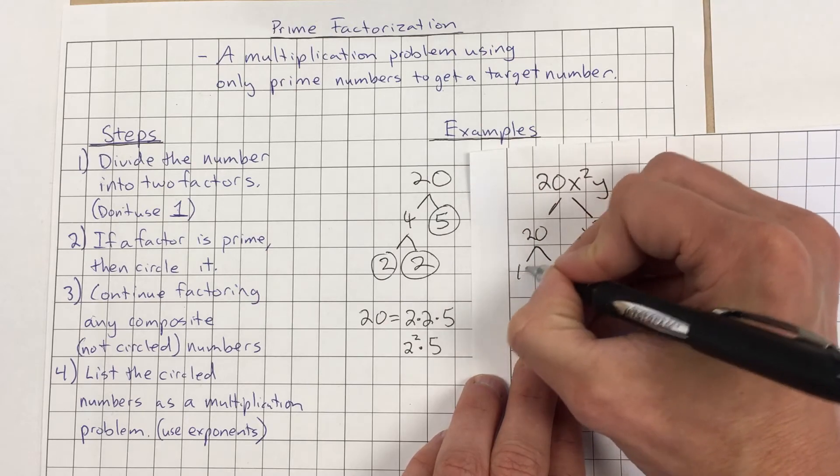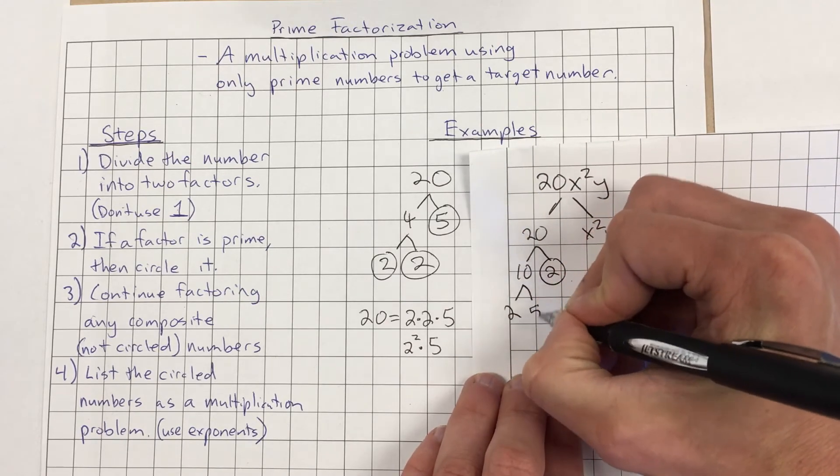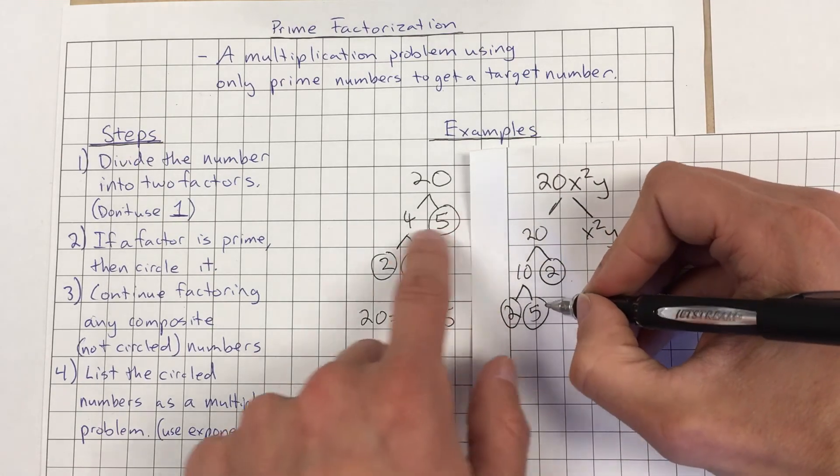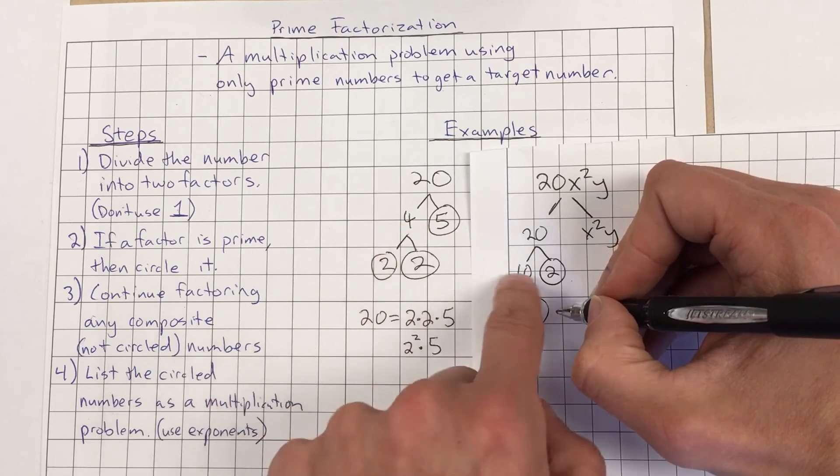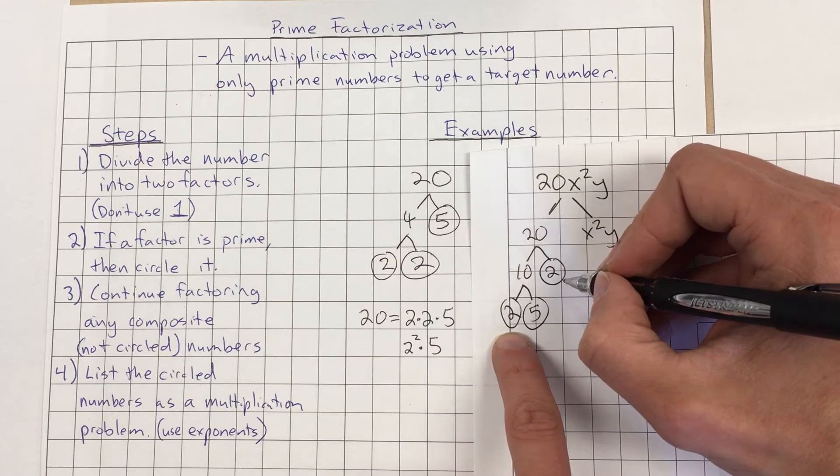We could say 10 and 2. Circle the 2. That's prime. 2 and 5. Circle those. Again, we have 2 times 2 times 5. So again, we can see whether we did 4 and 5 or 10 and 2, we still get the same numbers.